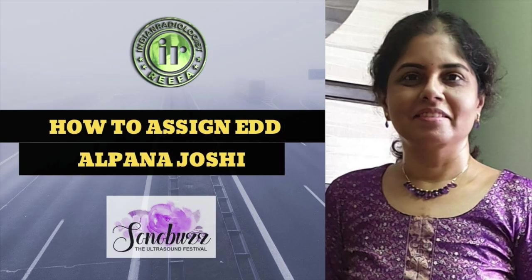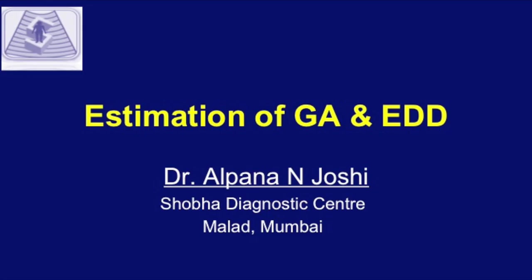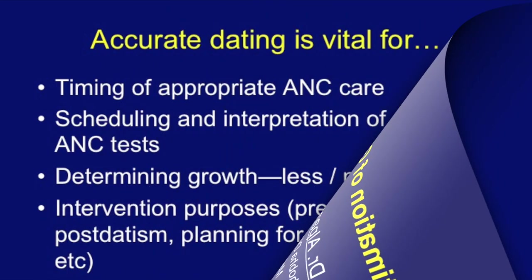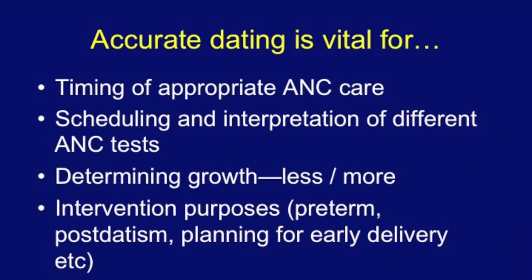Today we are going to talk about a very basic but important topic in fetal ultrasound: estimation of gestational age and assigning a correct delivery date. Accurate dating is very important for timing of appropriate ANC care, for scheduling and interpretation of different ANC tests, determining growth which may be less or more, for intervention purposes like deciding about preterm fetus, post-datism, and planning for early delivery.